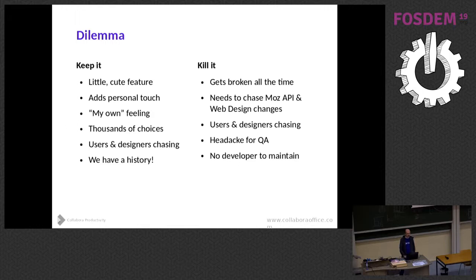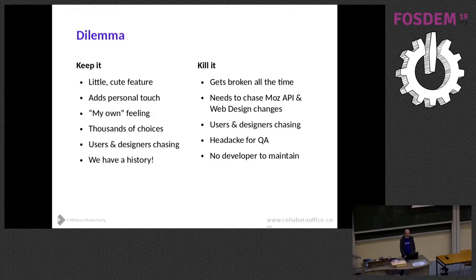It was giving users a feeling of 'my own LibreOffice,' with thousands of choices for putting color into your installation coming from Mozilla. Users were asking for it to work and designers were requesting patches. But the reasons for killing it were that it was getting broken all the time, it needed to chase Mozilla API and web design changes, it was a headache for QA people, and there was no developer to maintain it.